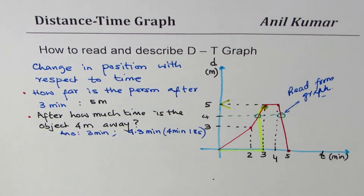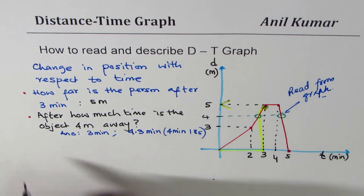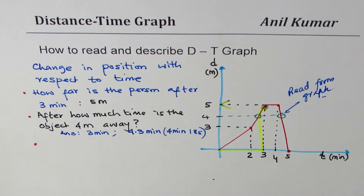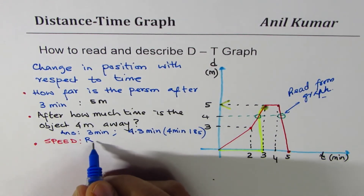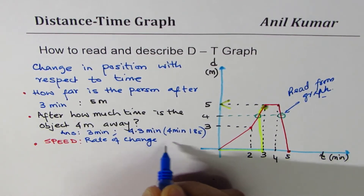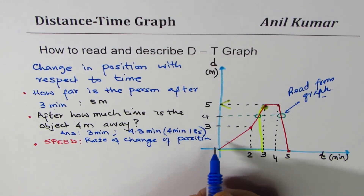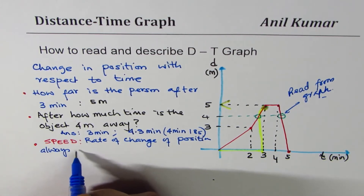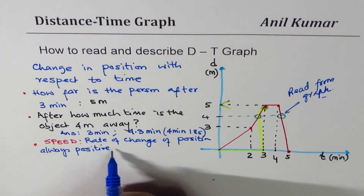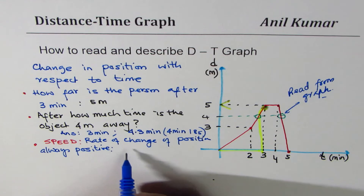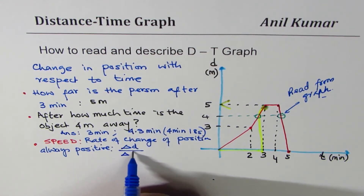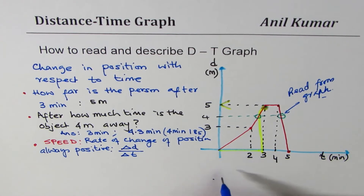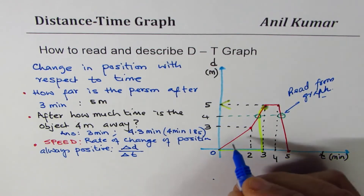Now another type of question you can answer from such graphs is about speed. Speed is the rate of change of position, and when calculating speed it is always positive — remember that. From the distance-time graph, speed equals change in distance over change in time.